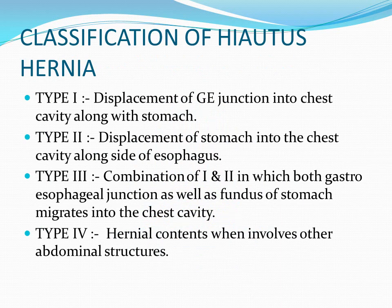What is the classification of hiatus hernia? There are four types. Type 1 is displacement of the gastroesophageal junction into the chest cavity along with the stomach. Type 2 is displacement of the stomach into the chest cavity along the sides of the esophagus. Type 3 is a combination of types 1 and 2, in which both the gastroesophageal junction and the fundus of the stomach migrate into the chest cavity. Type 4 is when the hernia involves other abdominal structures.